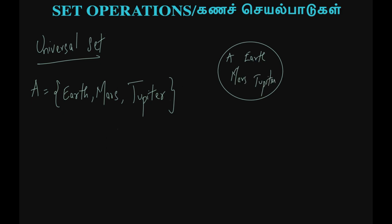In our example, we have one set. We also have a Universal Set. John Venn says we represent the Universal Set with a square. If we have a set, we draw a square around it — that square is the Universal Set.